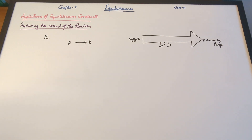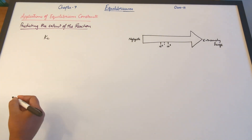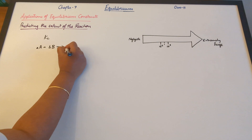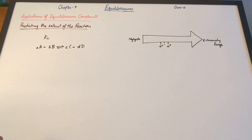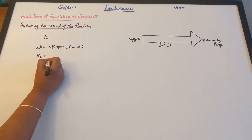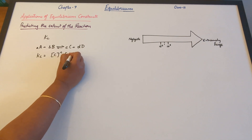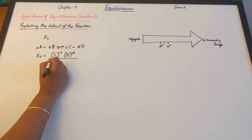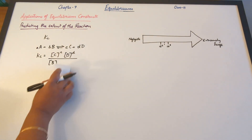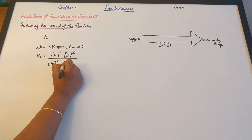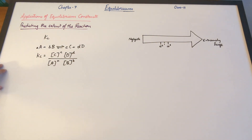Let's take a general reaction: aA plus bB gives rise to cC plus dD. As we know from the past couple of videos, we know how to write the equation for Kc. So Kc equals the concentration of C to the power c, the stoichiometric coefficient, times concentration of D to the power d, divided by concentration of A to the power a and B to the power b. This is the equation for calculation of the equilibrium constant Kc.